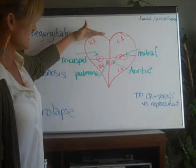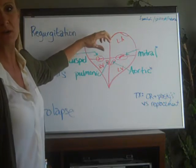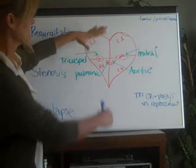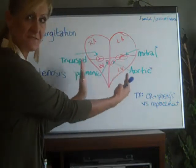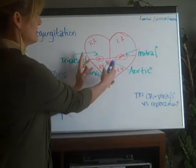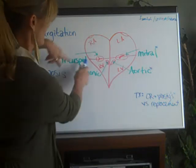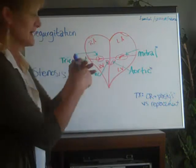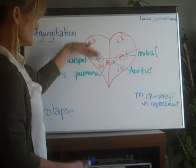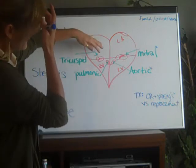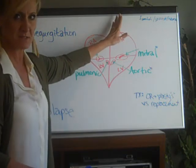Every time the atria are contracting — which occurs during diastole — the tricuspid valve is opening so the ventricles can fill. Then during systole, when those ventricles are contracting and ejecting blood, the tricuspid valve and the mitral valve shut really tight so the blood can't get back up into the atrium. The same thing occurs with the pulmonic valve on the right side, sending blood up into the pulmonary system and the lungs.